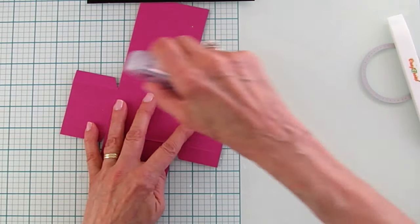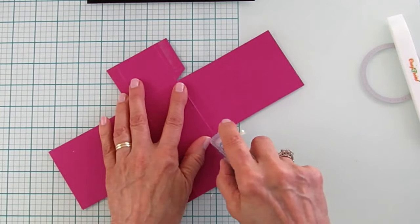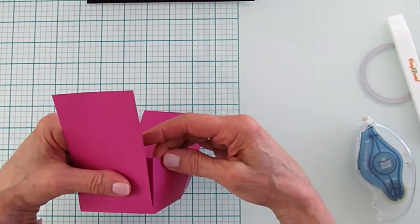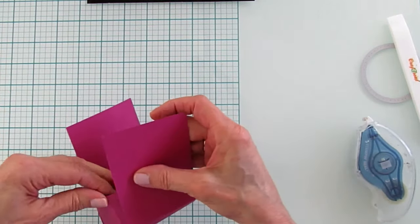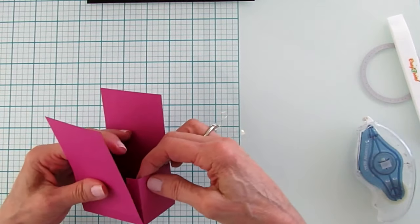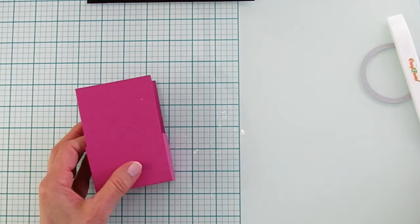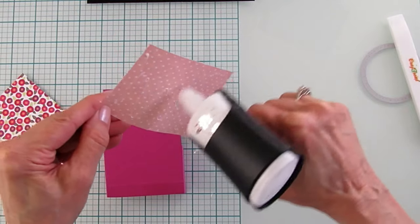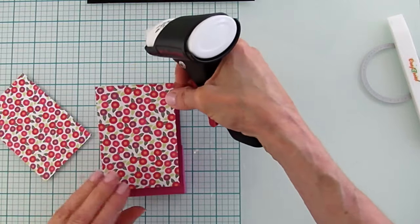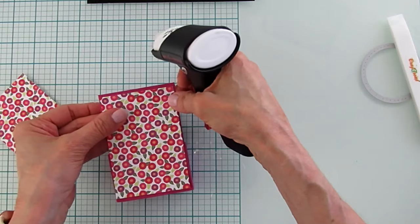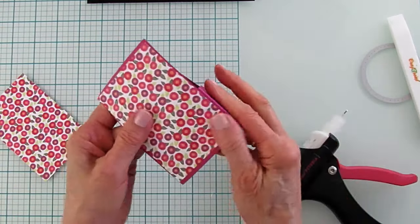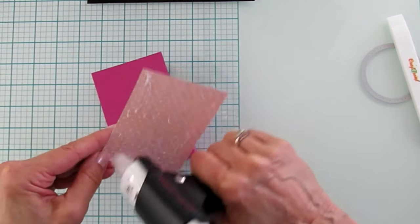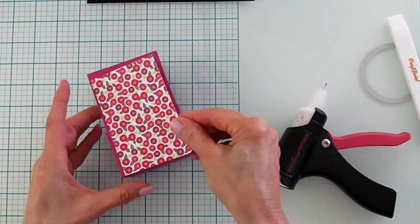Okay, so all the score marks are scored. You don't want to score this inside one. You just want to leave that one. So I'm going to grab my seal plus. And we are going to just put it on all these glue tabs here. And then you're just pulling these up.